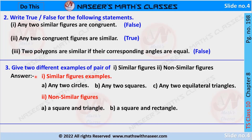Third part: give two different examples of similar figures and non-similar figures. Examples of similar figures are: any two circles, because their corresponding radii are in the same ratio; any two squares, because each corresponding angle is equal and corresponding sides are in the same ratio; and any two equilateral triangles, because each angle equals 60 degrees and their corresponding sides are in the same ratio.